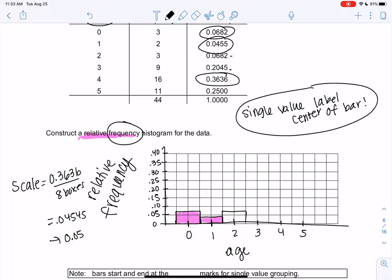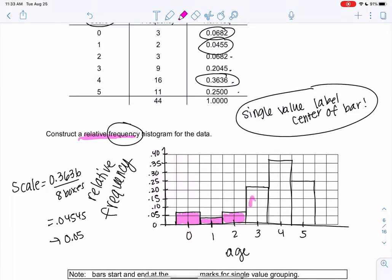Three we're going to go all the way up to 0.2, so that'll be slightly more than 20 right there. Four we're going to go all the way up to 0.36, which is above 0.35. And then five we're going to go to 0.25, and that is our histogram.